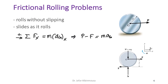Note that a_Gx is simply written as a_G because the motion is entirely along the x-axis. There is no motion along the y-axis, so the sum of all forces along y will equal zero.